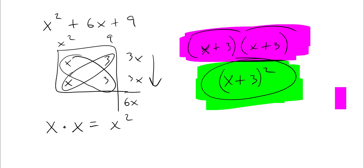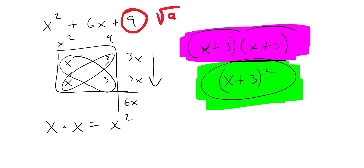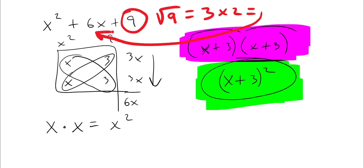x plus 3 and x plus 3 — you're able to recognize this because this is a perfect square. If you think about it, if I take the square root of 9, I get 3, and I multiply it by 2, which gives me 6. So that's kind of how it's going to work here.